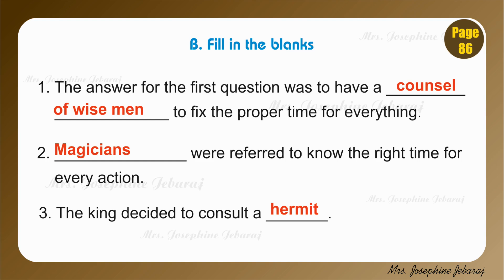Number 2. Blank were referred to know the right time for every action. Many learned men said that it is impossible to fix the right time for every action, and so they advised the king to consult with the magicians. So the right answer is: magicians.